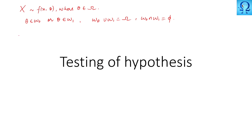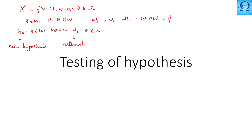We are going to label this hypothesis as H₀ — that is, θ is in ω₀ — versus H₁, where θ is in ω₁. This H₀ is referred to as the null hypothesis and H₁ is referred to as the alternate hypothesis. Often the null hypothesis represents no change or no difference from the past, while the alternate represents change or difference.